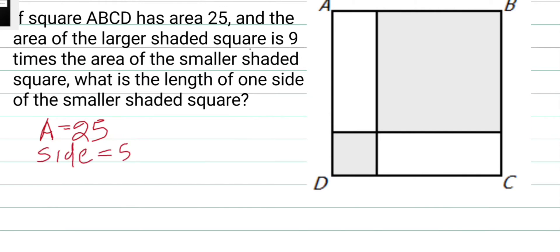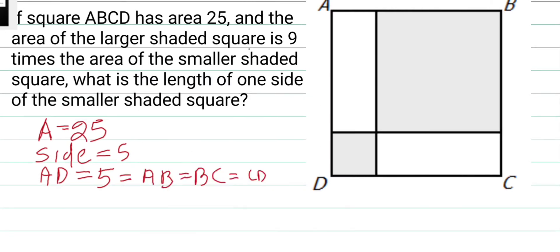5. That means AD equals 5, okay, so AD equals AB. Next thing is given: if this